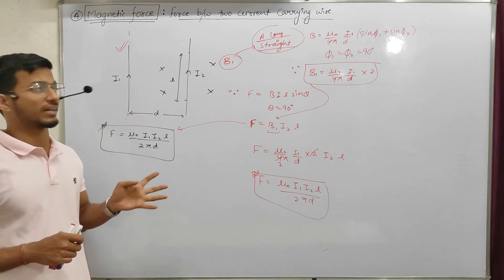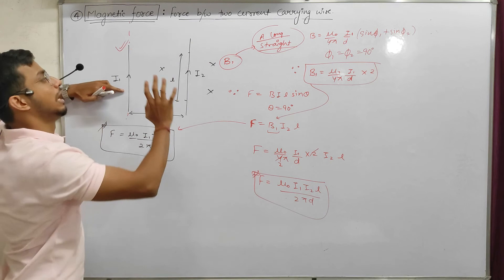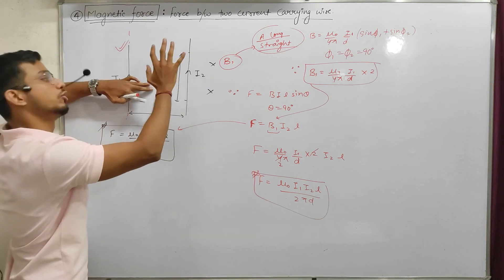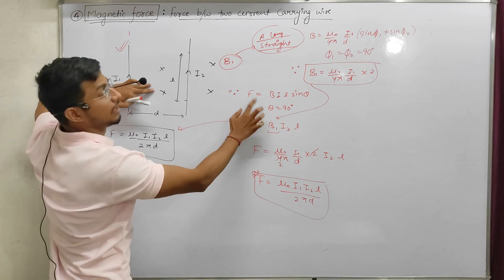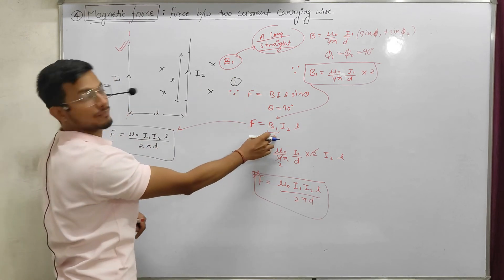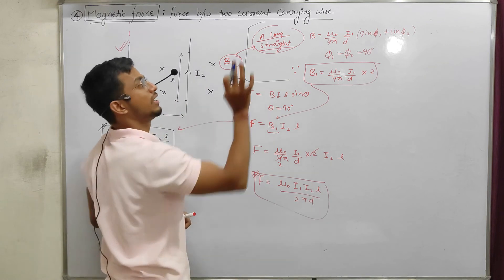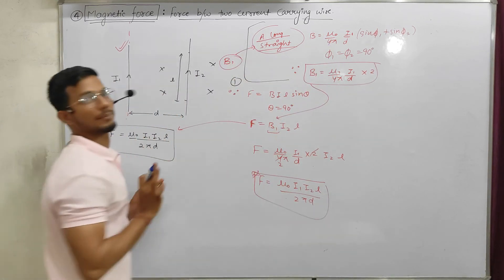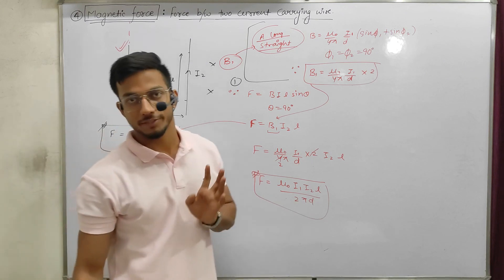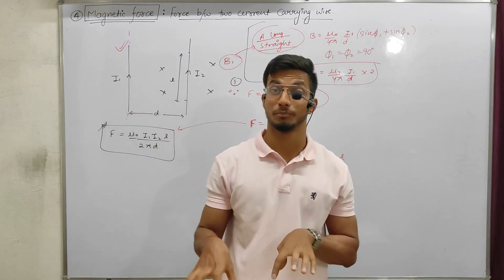Let's recap quickly. In this derivation: wire 1 creates a magnetic field B1; wire 2, being a current-carrying wire in that magnetic field, experiences a force F = B·I·L·sinθ. Substituting B1 from the straight-wire formula gives us the final result. I hope this video was helpful. In the next video, we will start torque, which is a very important topic, and galvanometer will follow.